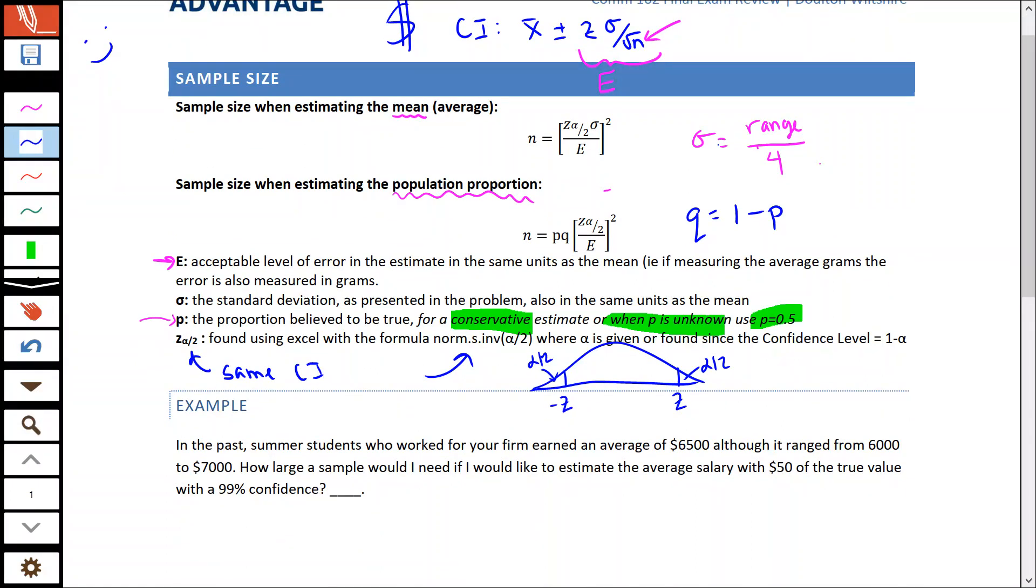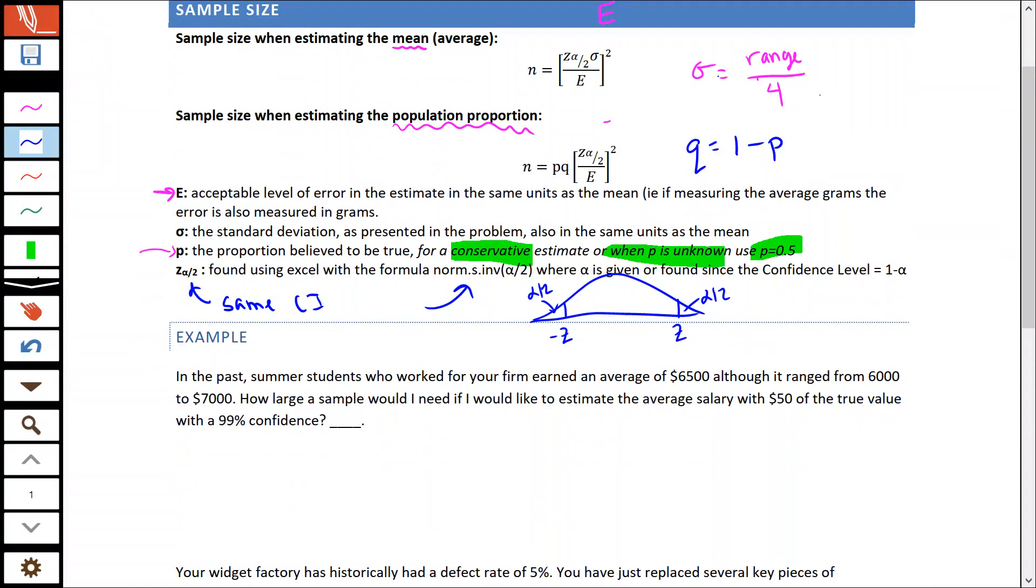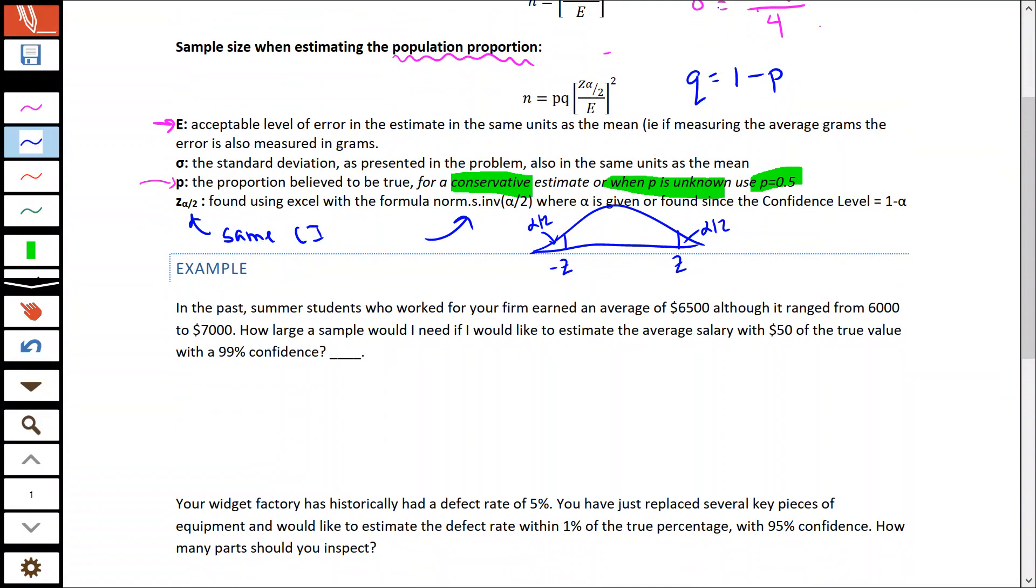Let's take a look at these examples here. First one: In the past, summer students who worked for your firm earned an average of $6,500, although it ranged from $6,000 to $7,000. How large of a sample would I need if I'd like to estimate the average salary within $50 of the true value with a 99% confidence?